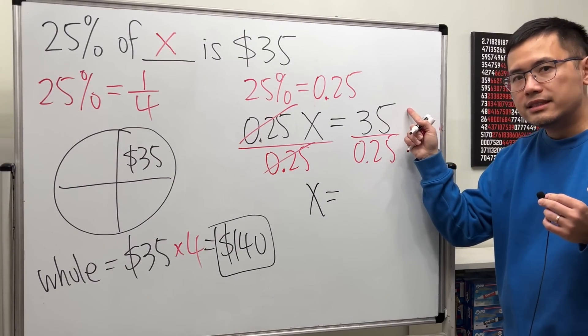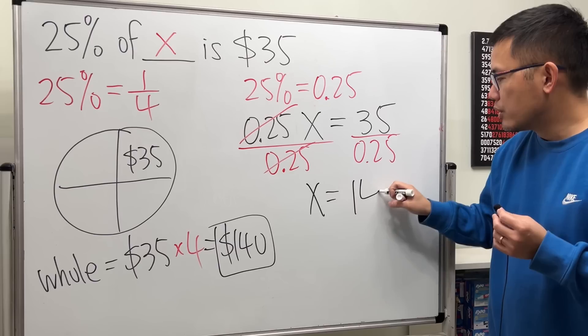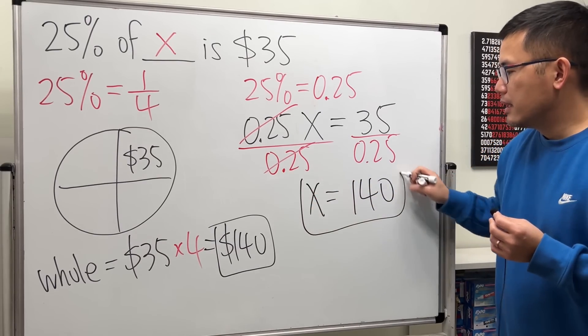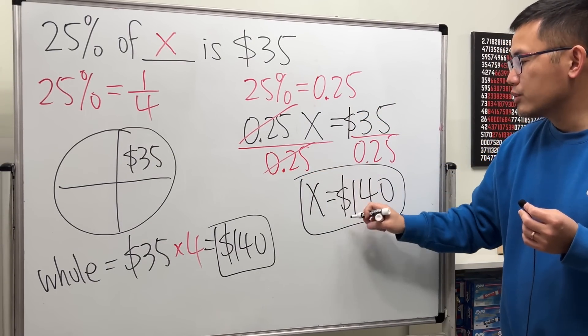Go ahead and do 35 divided by 0.25, and you will get 140. And of course, it was about dollars, so this is also about dollars.